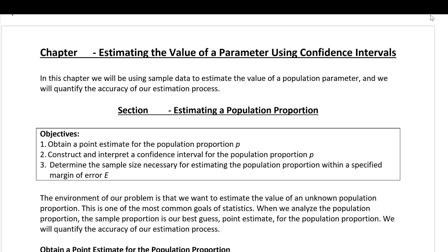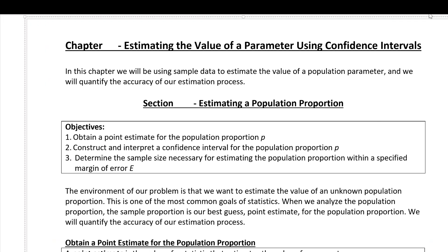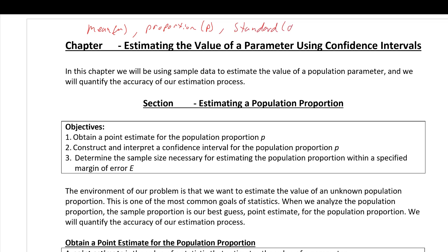This chapter is about estimating the value of a parameter using confidence intervals. A parameter is a numerical summary on the population. The ones we're going to talk about in this chapter are the mean (mu), the proportion (lowercase p), which is what this section is about, and the standard deviation (lowercase sigma).